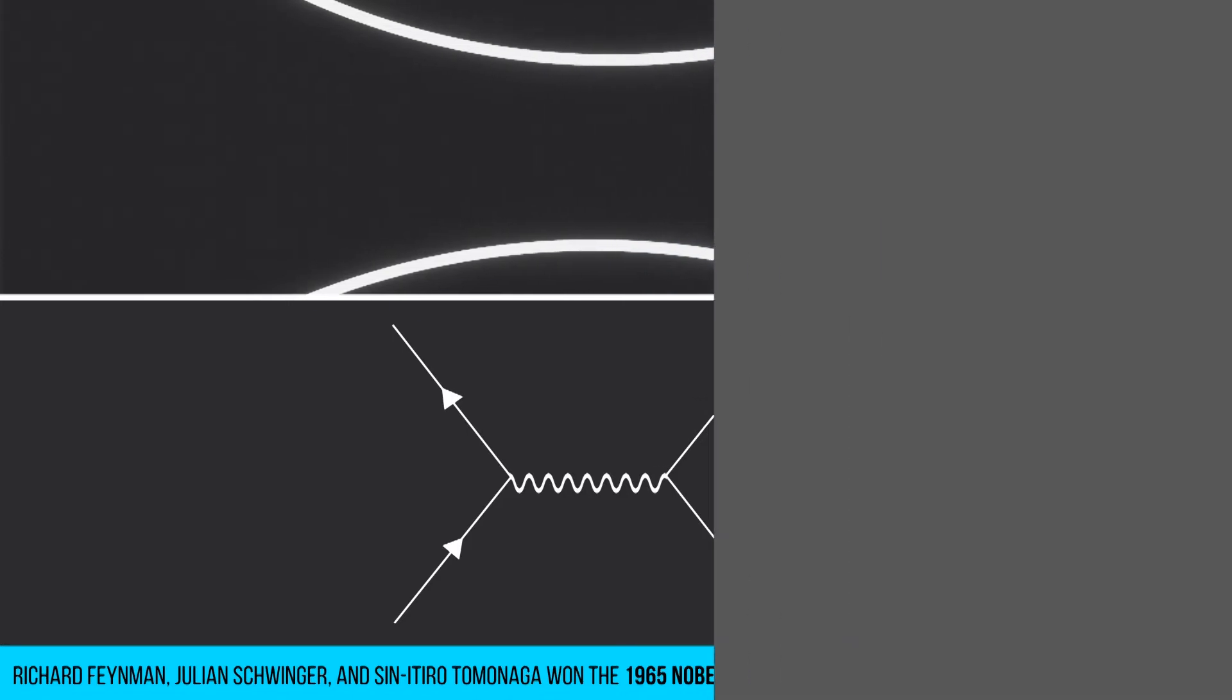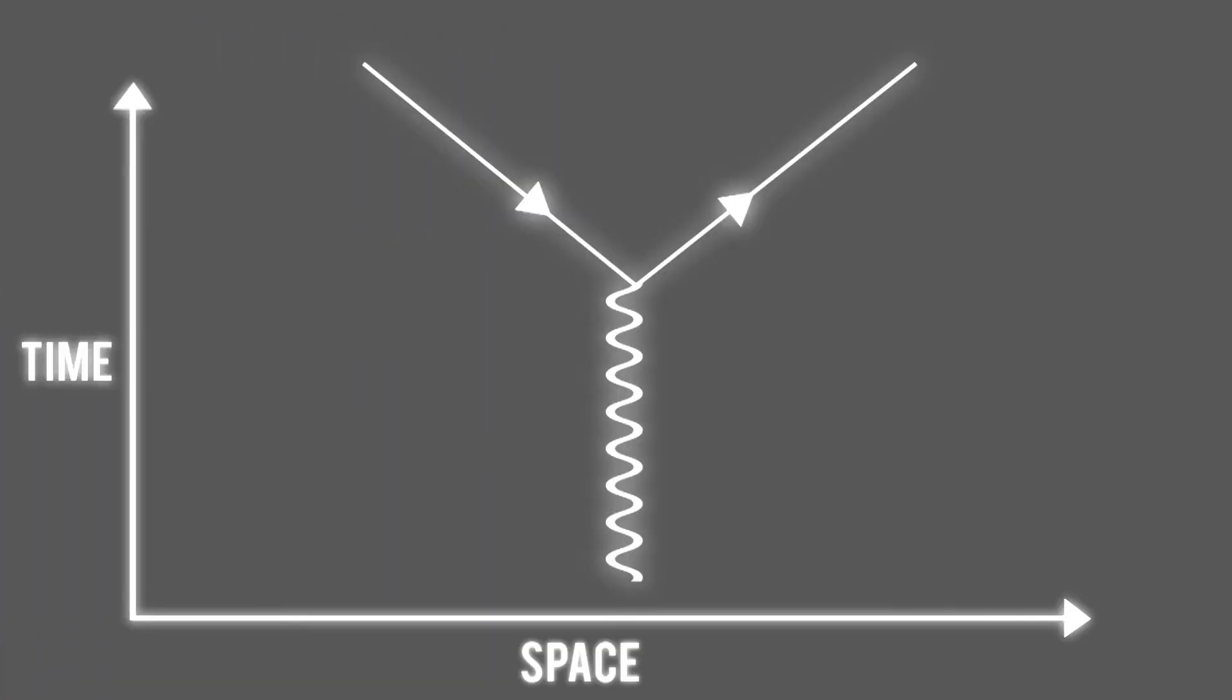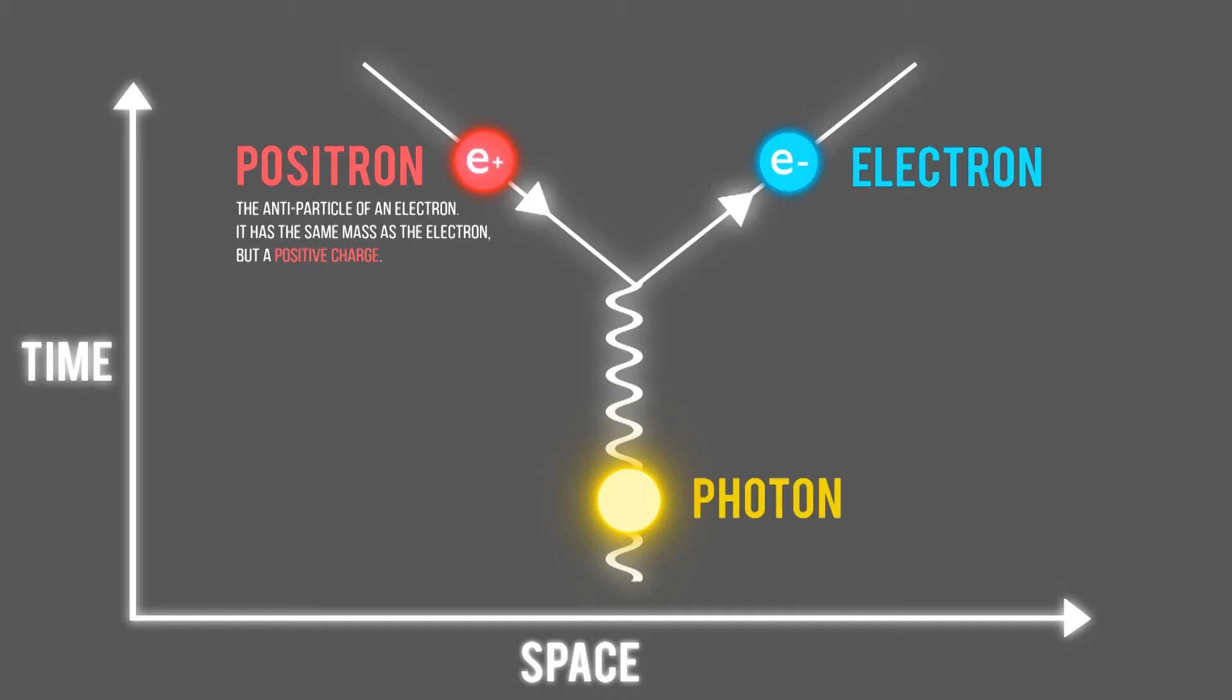The diagrams are models plotted in space-time, where straight lines pointing upwards in time are electrons, while those pointing downwards are positrons. Wavy lines depict photons, and their intersections depict interactions.